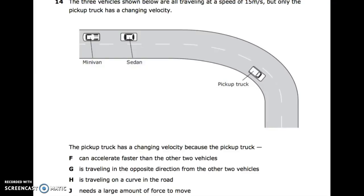Number fourteen: the three vehicles shown below are all traveling at a speed of 15 meters per second, but only the pickup truck has a changing velocity. You have a minivan, a sedan, and a pickup truck. The pickup truck has a changing velocity because: F: it can accelerate faster than the other two vehicles. G: it is traveling in the opposite direction from the other two vehicles. H: it is traveling on a curve in the road. J: it needs a large amount of force to move.